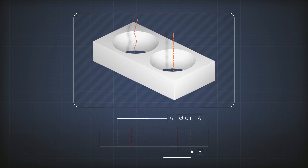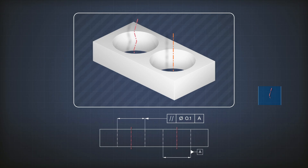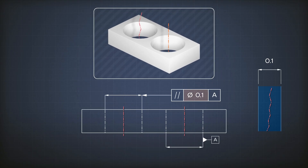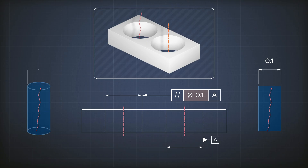A cylinder has a diameter in all directions. So if my real lines look like that, without the diameter sign I'm saying I have two parallel lines with a distance of 0.1 between them. But if I put a diameter sign before the value of the tolerance zone, then I'm saying I actually have a cylinder with a diameter of 0.1 — so I control it not only in one direction but in all directions.